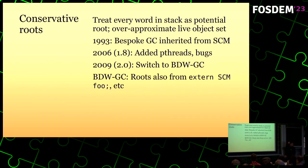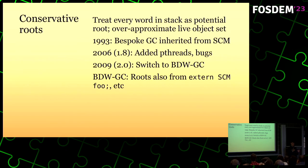Guile is very old — 30 years old, I think, this year. Since its very beginning it had a custom GC inherited from a previous Scheme implementation called SCM. In the mid-2000s we added support for proper pthreads — it was a buggy time, because threads and garbage collectors are very tricky to get right. When we switched to a third-party collector called the Boehm-Demmers-Weiser collector, a lot of those bugs went away because it takes threads more into account.